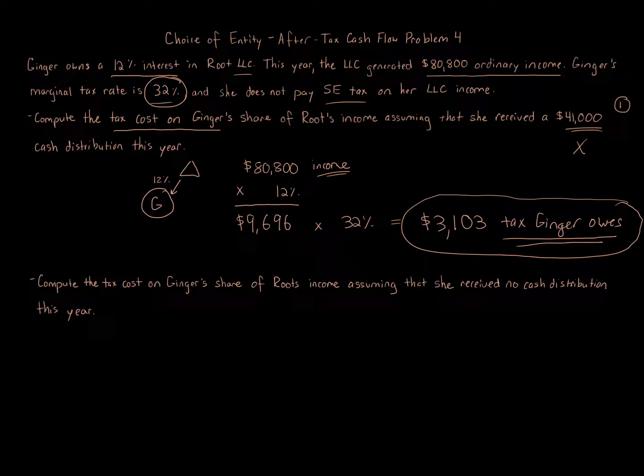The second question is: compute the tax cost on Ginger's share of Root's income assuming that now there's no cash distribution. So the difference between number one and number two is that in number one there's a $41,000 cash distribution; number two, it's zero.